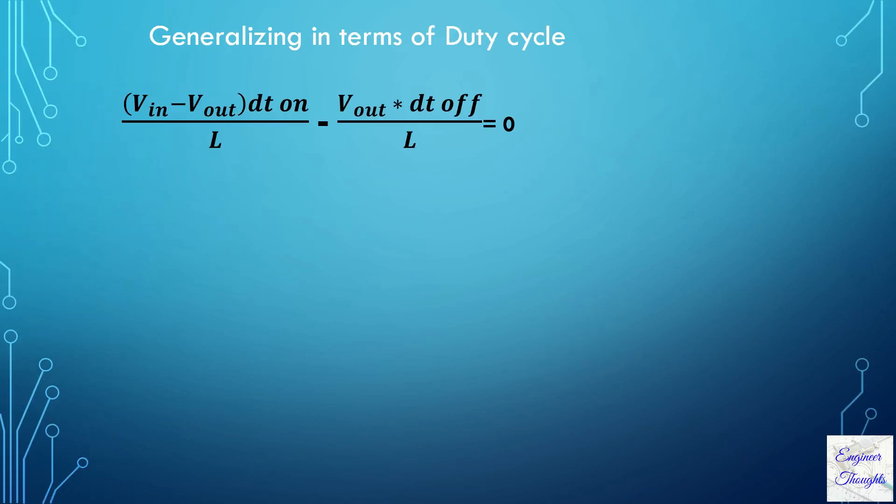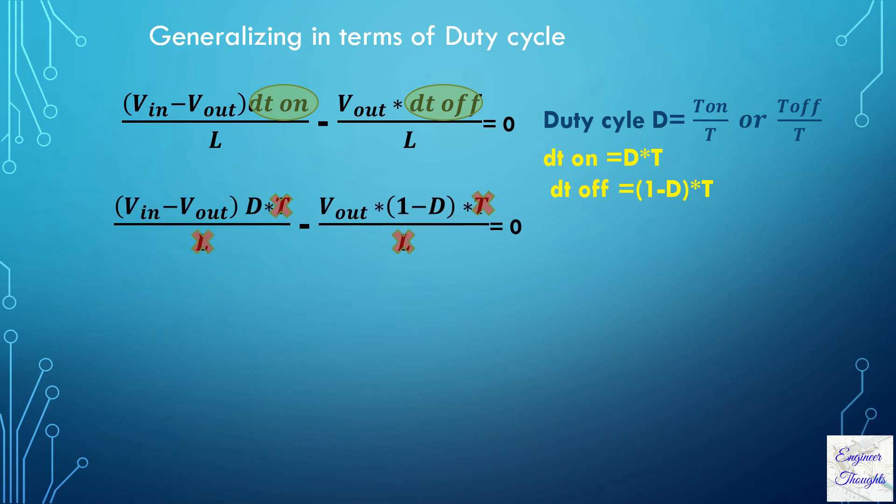Let us generalize the time dT_on and dT_off with a ratio called duty cycle, where duty cycle is the ratio of turn-on or off time to the total time period.